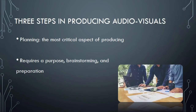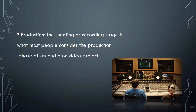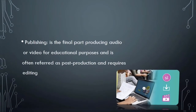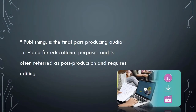The three steps in producing audio visuals are: planning — the most critical aspect, which requires a purpose and brainstorming; preparation — preparing a concept for a project is the most important part; and production — the shooting or recording stage, which is what most people consider the production phase of an audio or video project. The last step is publishing, the final part of producing audio or video for educational purposes, often referred to as post-production, which requires editing after the project is finished.